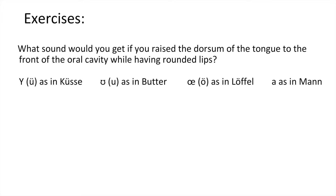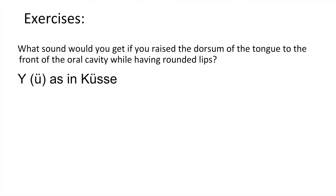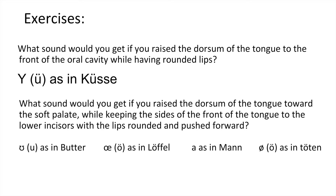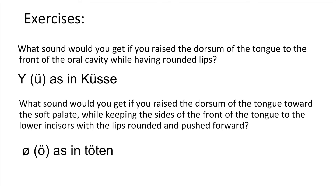Now that you have had some instruction, it is time for some more review. You may want to review the organs of speech before doing this exercise. What sound would you get if you raised the dorsum of the tongue to the front of the oral cavity while having the lips rounded? Options: ü as in küsse, ö as in butter, ö as in löffel, or æ as in man. The correct answer is ü as in küsse. What sound would you get if you raised the dorsum of the tongue toward the soft palate while keeping the sides of the front of the tongue to the lower incisors with the lips rounded and pushed forward? Options: ö as in butter, ö as in löffel, æ as in man, or ö as in törtön. The correct answer is ö as in törtön.